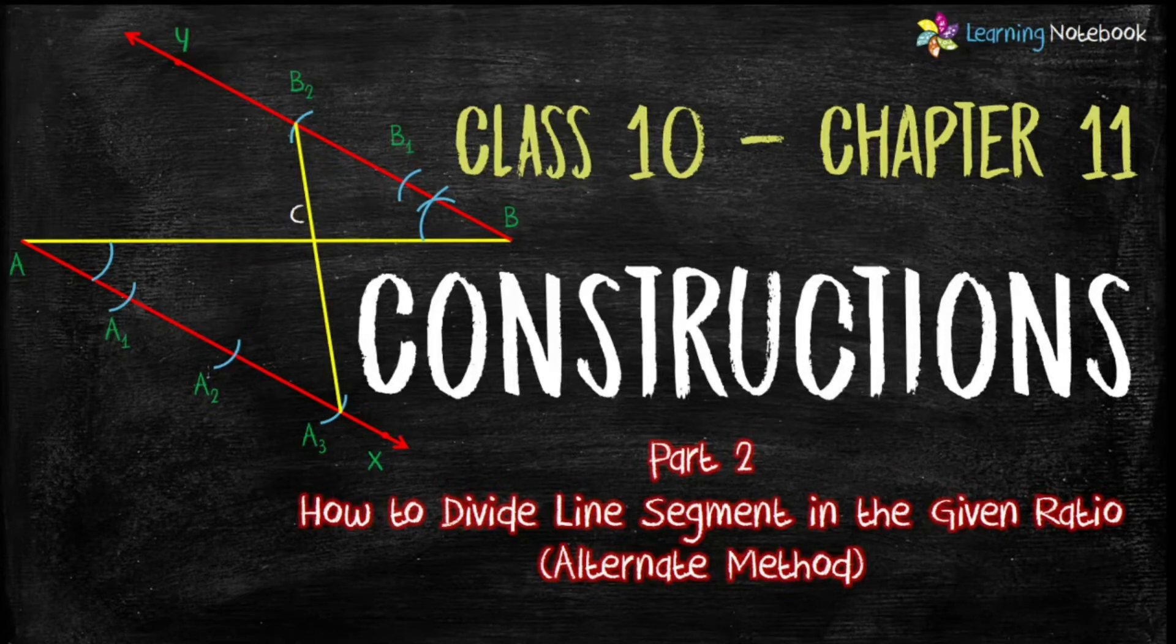In part 1, we understood our methods to divide line segments in the given ratio. Now, in this part 2, we will understand an alternate method to divide line segments in the given ratio.